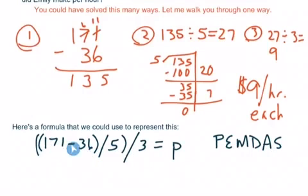And after I get that answer, I'm dividing. So, I have to put parentheses around this whole problem, the 171 minus 36, the answer of that, divided by 5 is what I said I wanted to do, right? That's where this second set of parentheses is coming from.